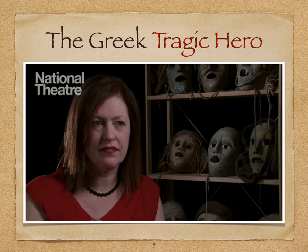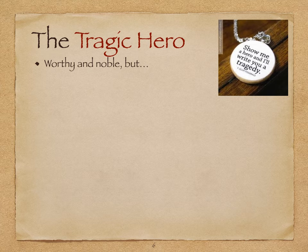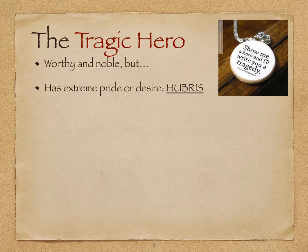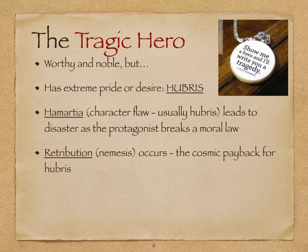A tragic hero is worthy and noble but has some kind of flaw. Normally the flaw is extreme pride or desire, and that's called hubris. The hubris is the tragic hero's hamartia — his character flaw. That hamartia leads to disaster, as the protagonist tends to break a moral law — for the ancient Greeks, a law that goes against their mythology and their God's laws. Because the tragic hero has a hamartia and therefore breaks some kind of moral law, retribution occurs. It's cosmic payback, and he suffers because of it.